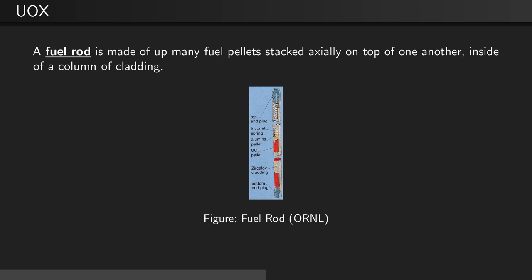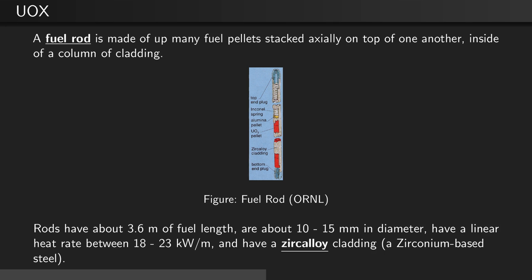A fuel rod is made up of many fuel pellets stacked axially on top of one another inside a column of cladding, as can be seen in this figure. Fuel rods have about 3.6 meters of fuel length and are approximately 10 to 15 millimeters in diameter. They have a linear heat rate between 18 and 23 kilowatts per meter and have a zircaloy cladding, which is a zirconium-based steel.